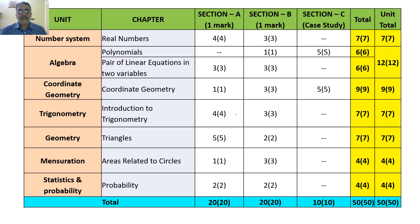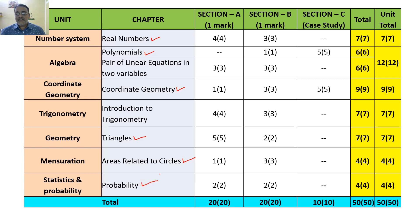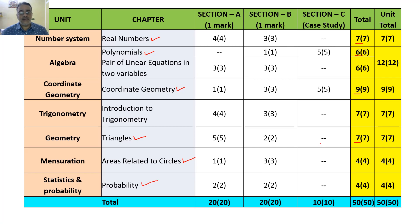Now let's look at the blueprint and which chapters to practice more. The easy chapters are: Real Numbers, Polynomials, Coordinate Geometry, Triangles, Areas Related to Circles, and Probability. If an average student concentrates on these six chapters, they can score: 7 + 6 = 13, plus 9 = 22, plus 7 = 29, plus 8 = 37 marks. But there's no choice if you prepare only these six chapters.